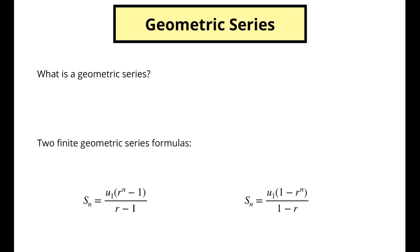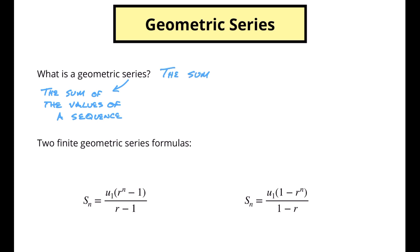What is a geometric series? Well, a series is the sum of the values of a sequence. And that means a geometric series is simply the sum of the values of a geometric sequence. So the first thing we see is that we actually have two separate equations, and these are called two finite geometric series formulas.